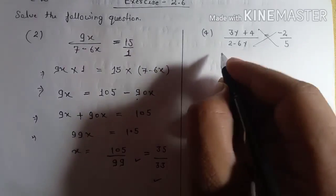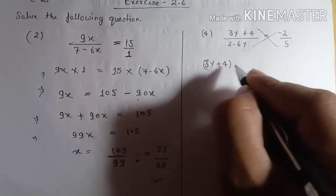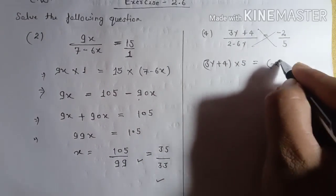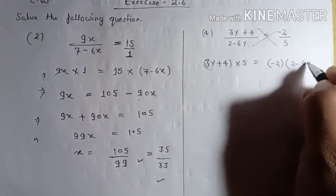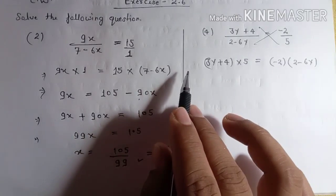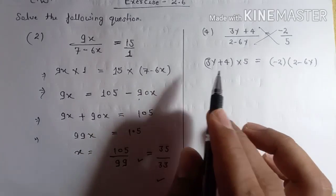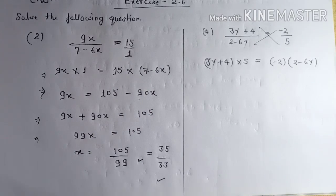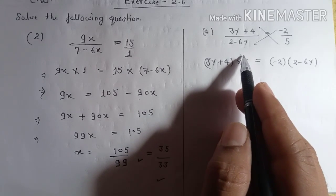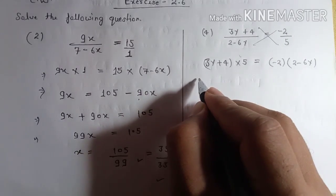Keep the equality sign in the middle. Three y plus four into five is equal to minus two multiplying two minus six y. You can write five into three y plus four or three y plus four into five. So multiply by five: five into three y becomes fifteen y, and five into four is plus twenty.